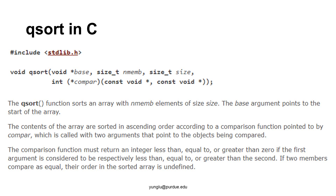The comparison function must return an integer less than, equal to, or greater than zero if the first argument is considered to be respectively less than, equal to, or greater than the second. If two members compare as equal, their order in the sorted array is undefined.